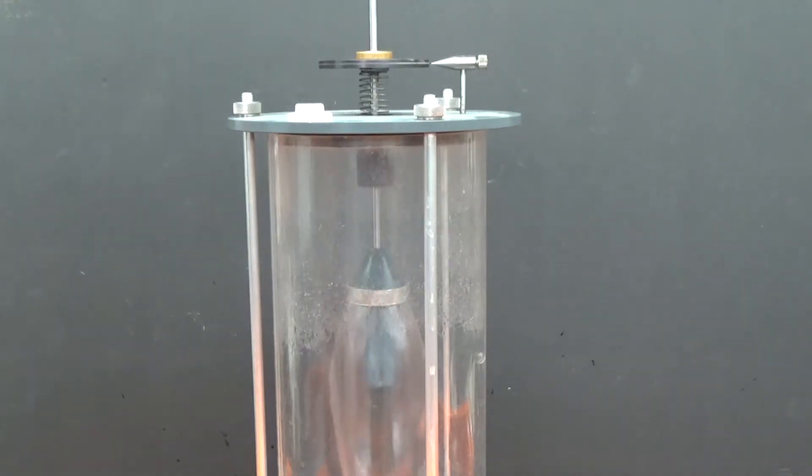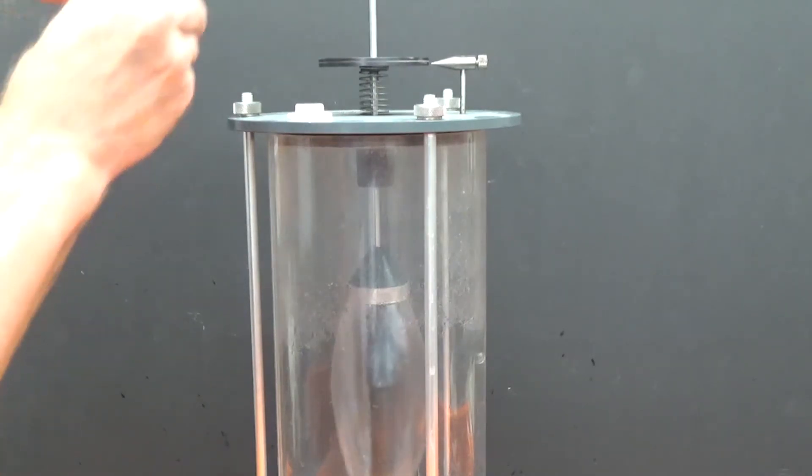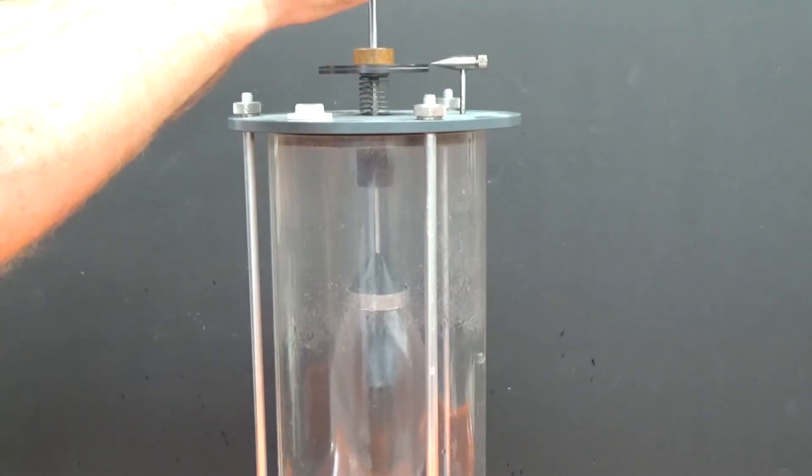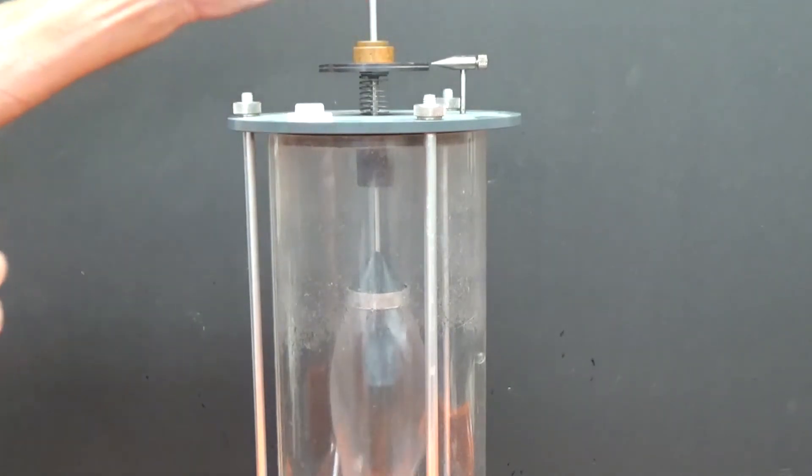The next mass is 60 grams, so I'm going to remove the 20, add a 50 and a 10, and adjust the flow rate.